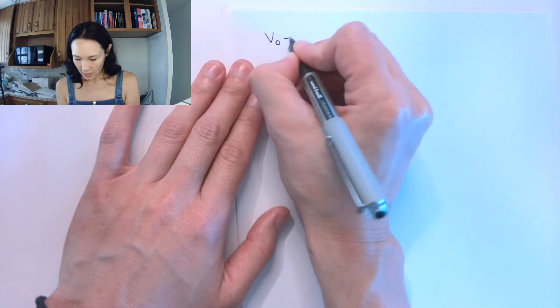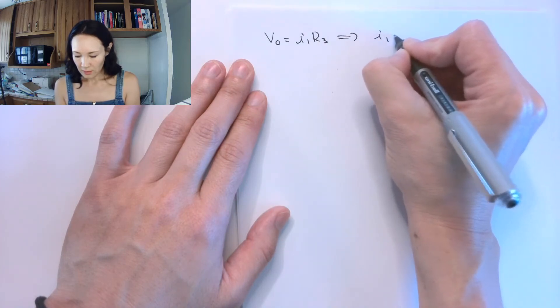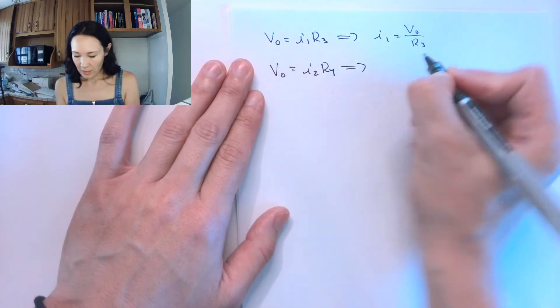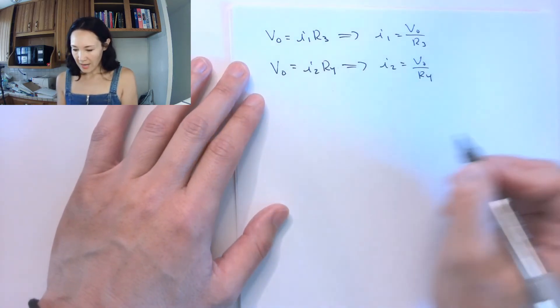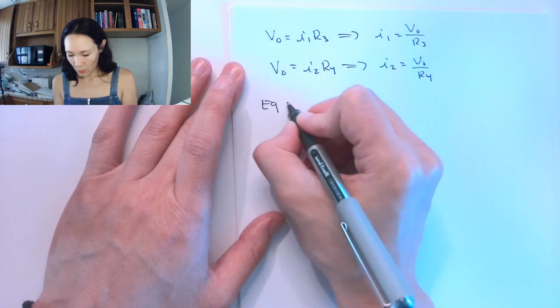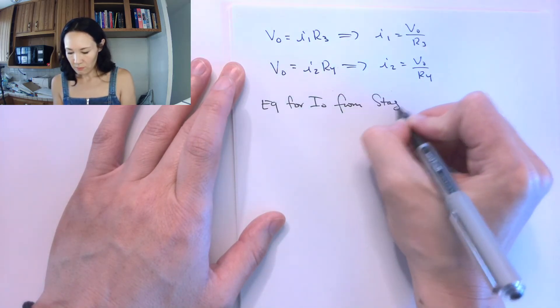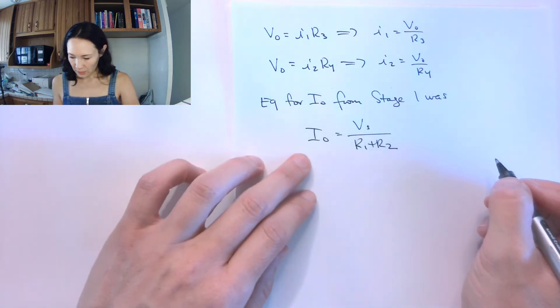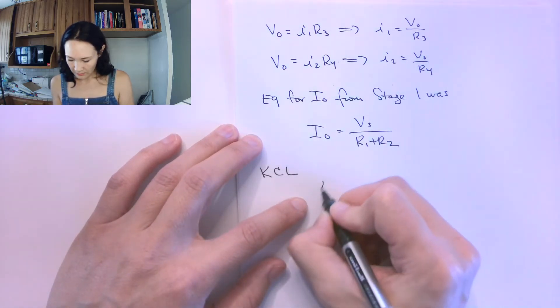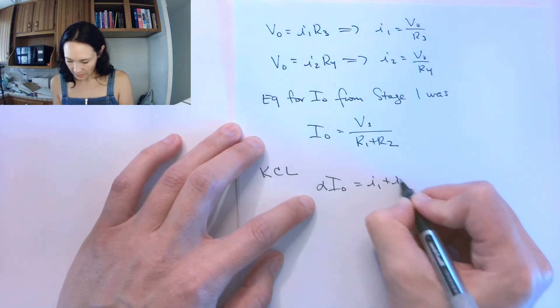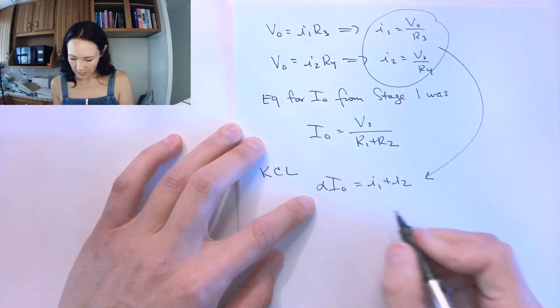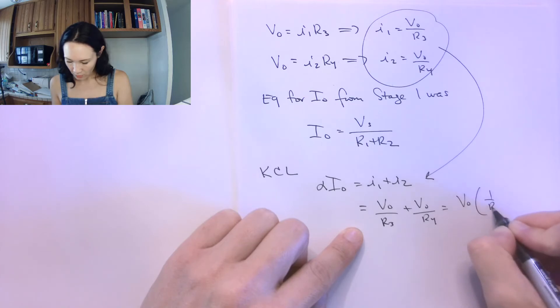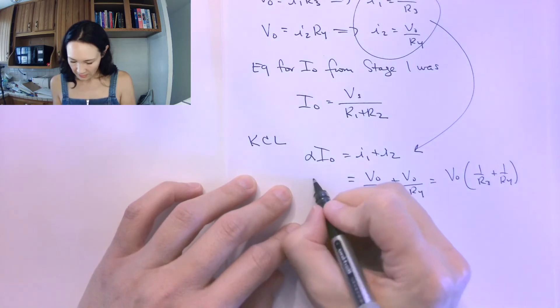Our Ohm's law equation, V0 equals I1 times R3, implies that I1 equals V0 over R3. Our Ohm's law equation at the other branch, V0 equals I2 times R4, implies that I2 equals V0 over R4. Now our equation for I0 from stage one was I0 equals Vs over R1 plus R2. My KCL equation was alpha I0 equals I1 plus I2. I'm going to take these things and substitute into here. This gives me V0 over R3 plus V0 over R4, so I have V0 times one over R3 plus one over R4. Great.